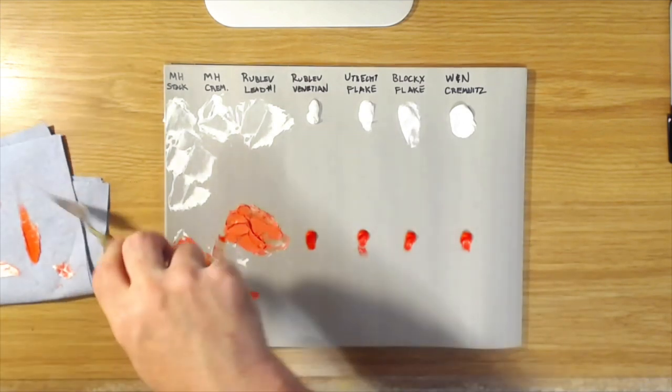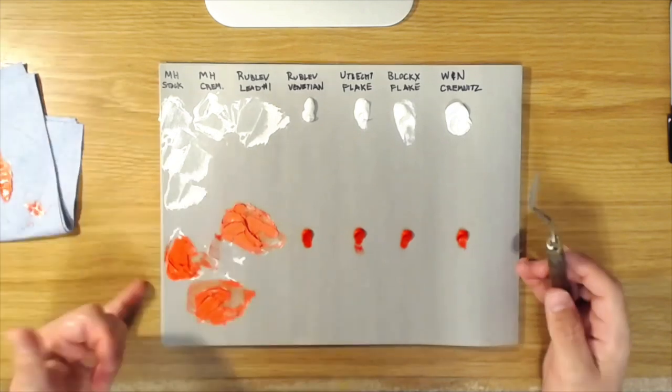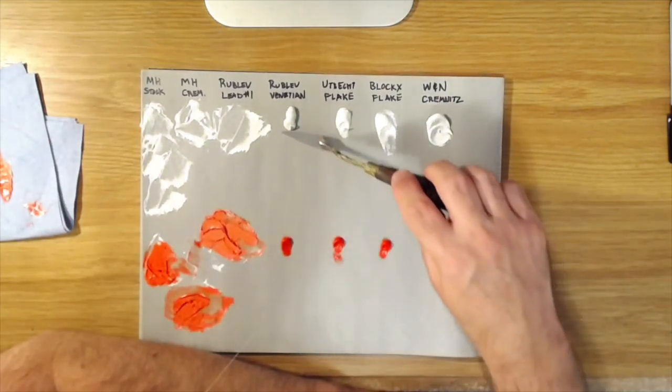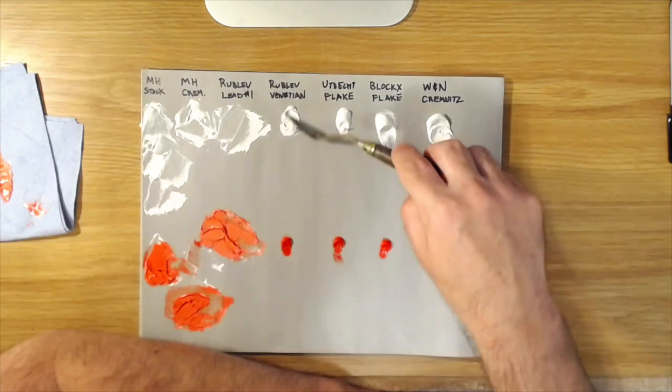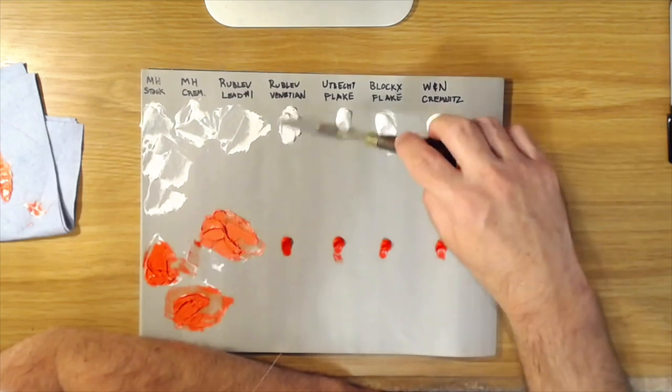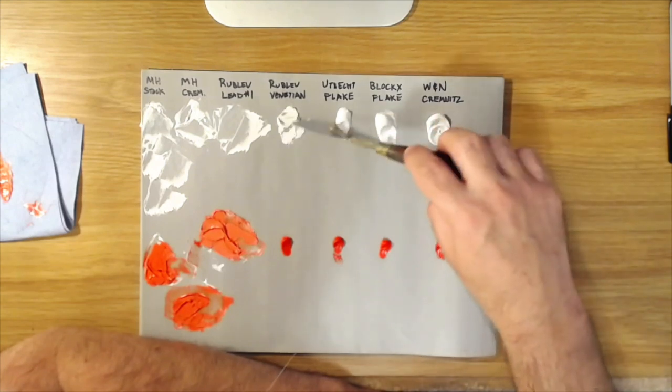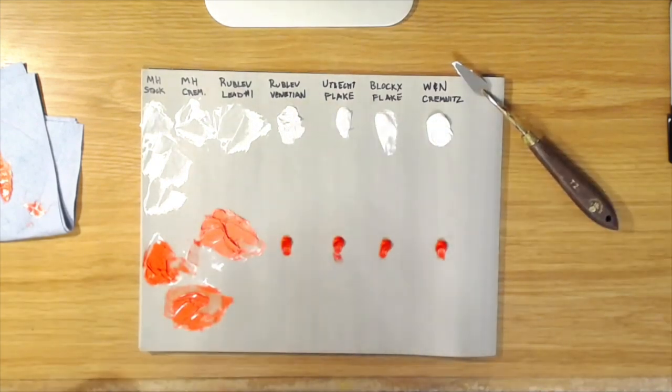This Rublev Venetian White is an interesting white. I haven't really used it too much but I bought it because I was curious. I don't know again if you can see, but it comes out of the tube slightly, it's kind of a slight off-white. Let me show you something real quick.